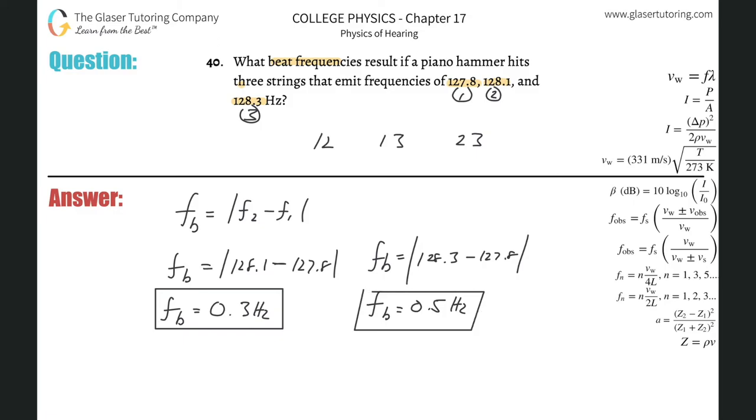And then last but not least, we've got to do it between two and three. So the beat frequency there is going to be 128.3 minus 128.1. And when we do that, it's going to be 0.2 hertz.